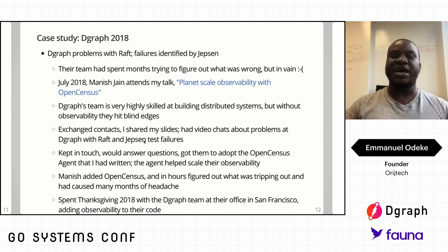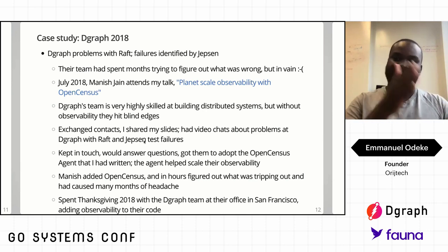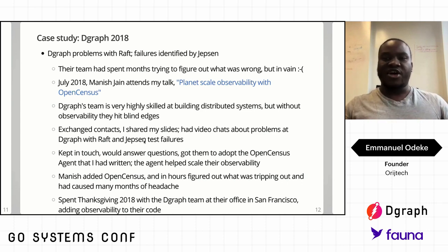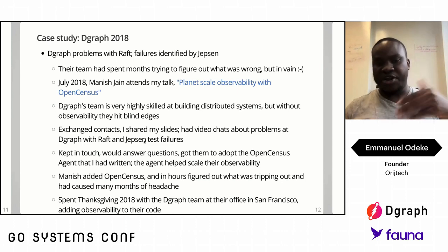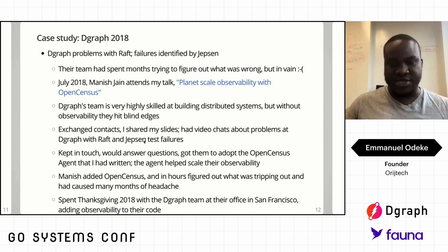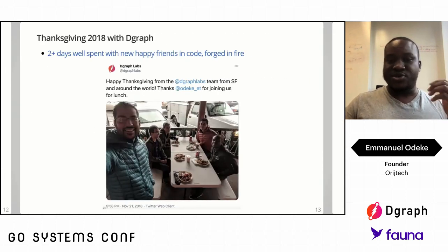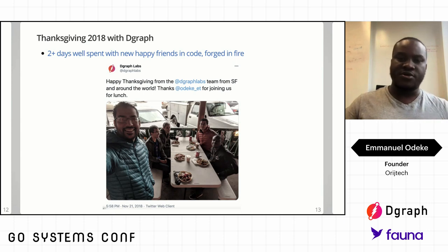Manish was very happy that it all got sorted out. I was basically his Geico Lizard — 15 minutes could save you 15%. Hours of just applying it saved them the months and months they had spent banging their heads against the wall. Right after that, they were excited about OpenCensus. They asked me for help to add more integrations, and that Thanksgiving I volunteered — pro bono — spent two days at their office, helped them integrate OpenCensus, answered every single question they had. They took me out for Thanksgiving lunch and instead of turkey, we had tacos.